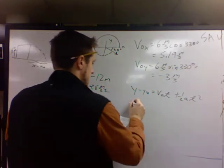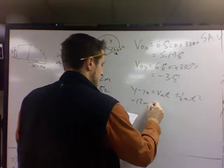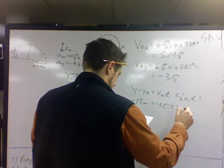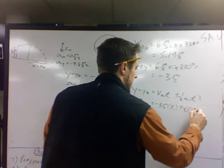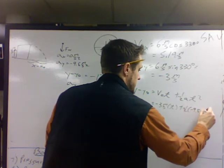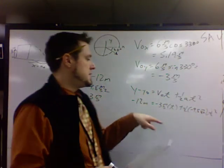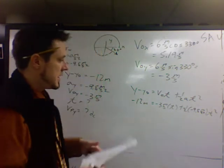Plug in. Negative 12 meters equals negative 3 meters per second times t plus 1 half times negative 9.8 meters per second squared times t squared. And at this point, it's a quadratic.